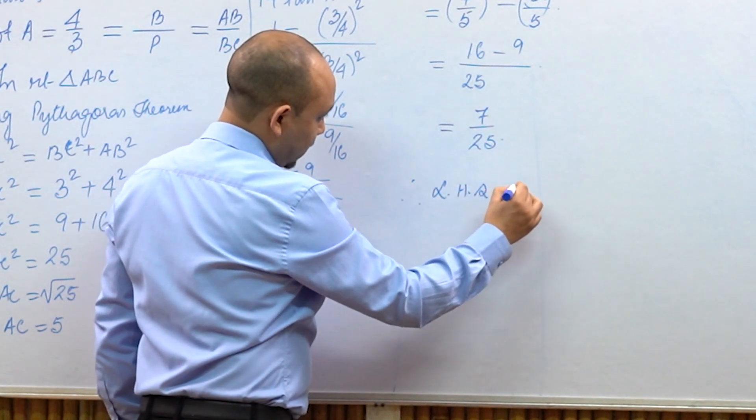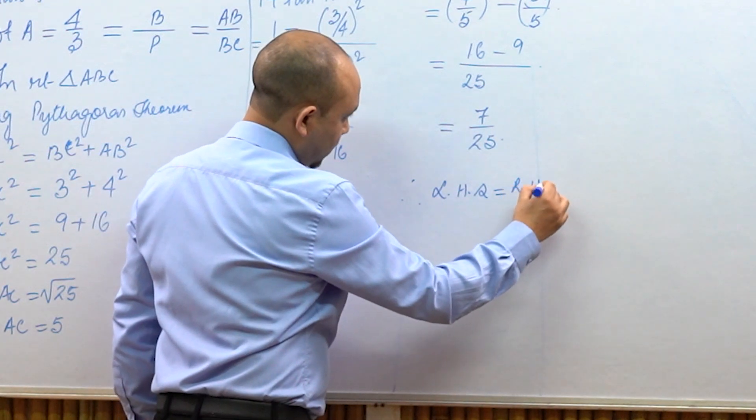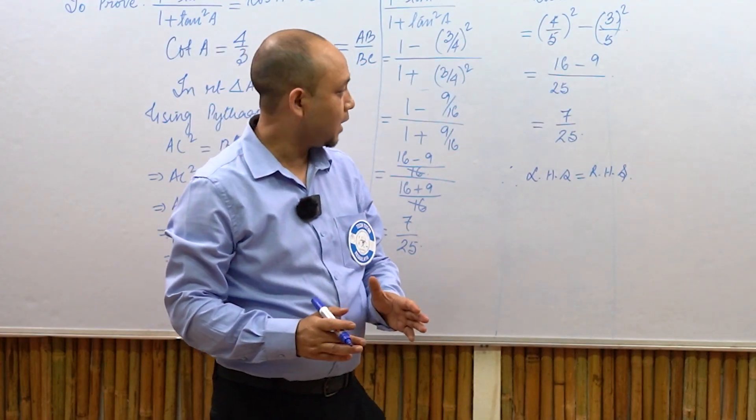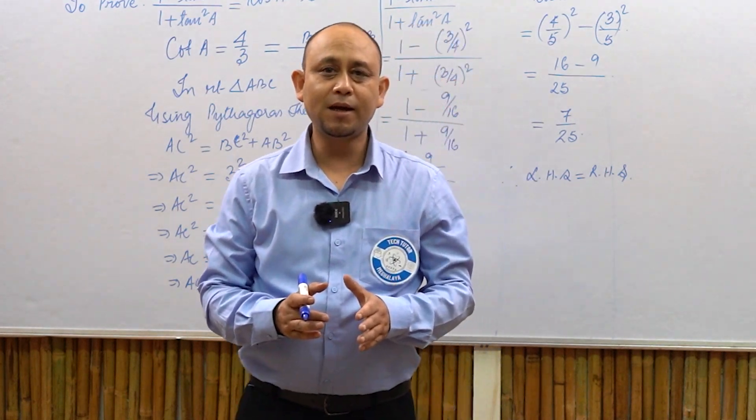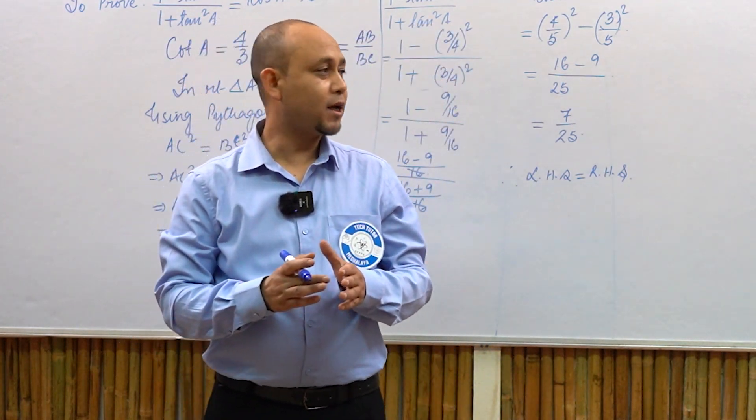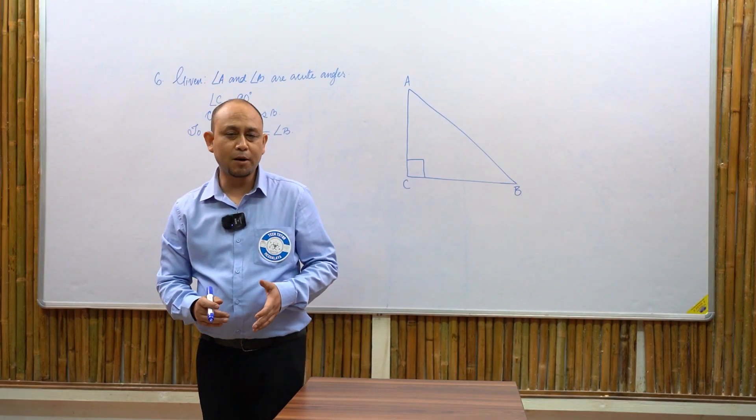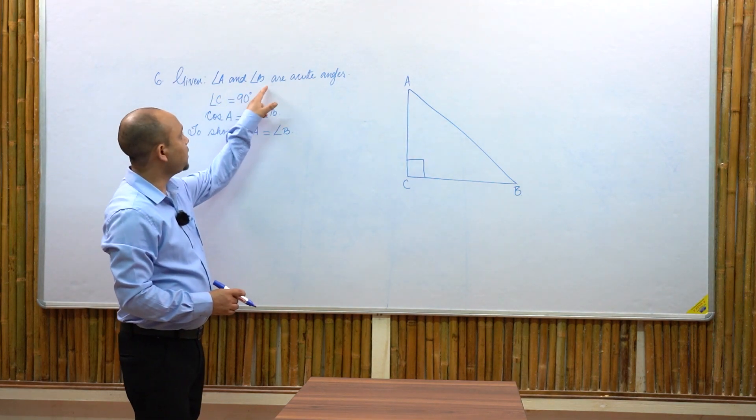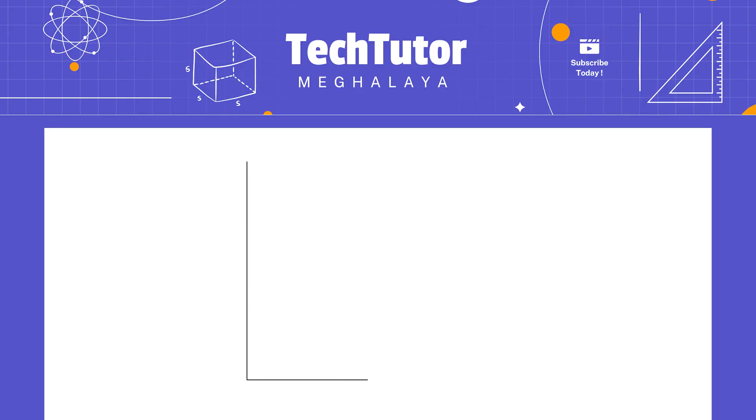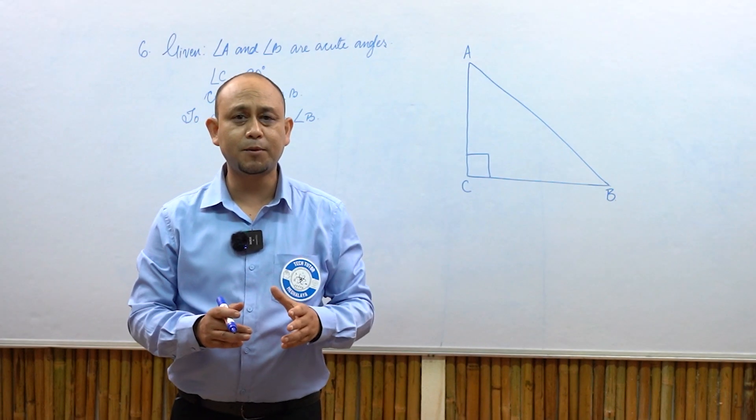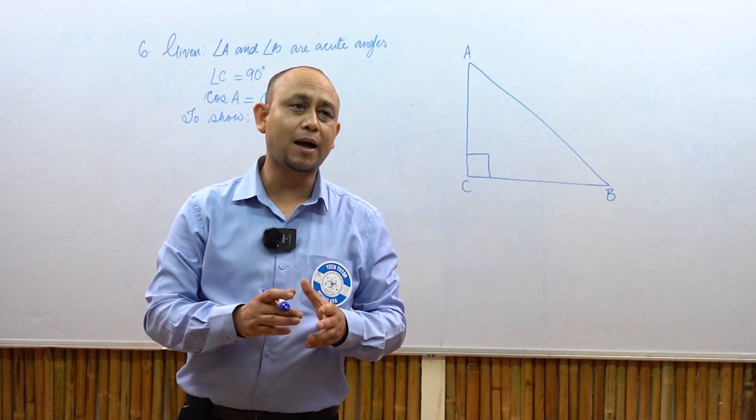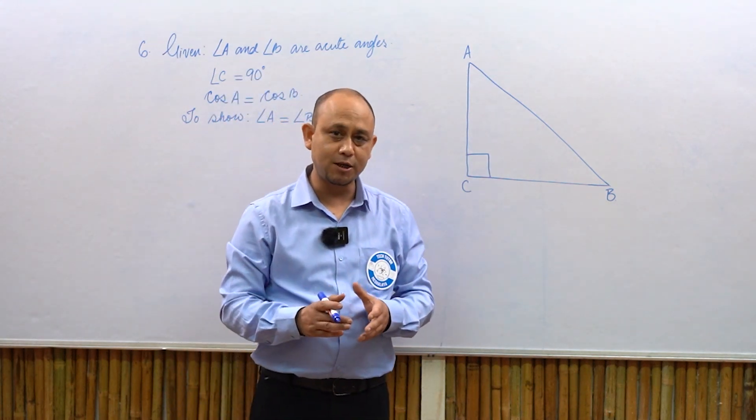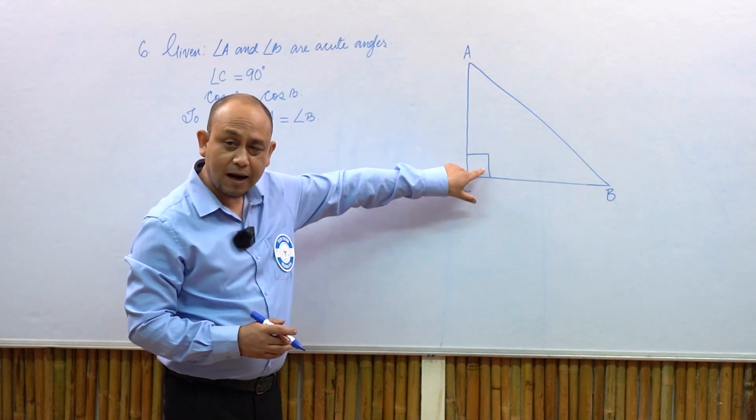Therefore, left hand side is equal to right hand side. This completes the proof. This is exercise 8.1. Next question.